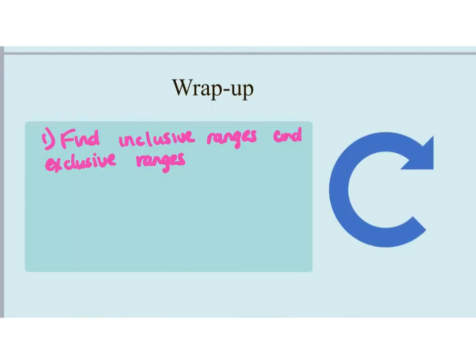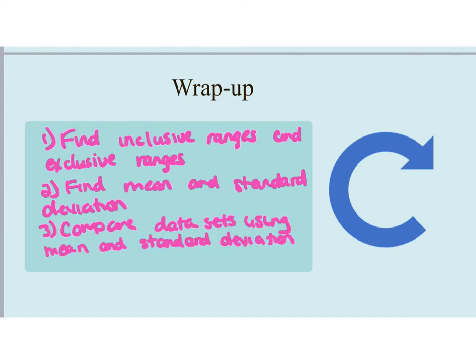After reviewing this video, you should be able to find the inclusive and exclusive range, find the mean and standard deviation using their respective formulas, and compare data sets using mean and standard deviation together. The mean and SD together give a better sense of what raw data look like than the mean alone. Overall, you should understand why variability is computed, three ways to compute it — inclusive range, exclusive range, and standard deviation — and why we don't just look at averages like the mean, median, and mode, but also use measures of variability.